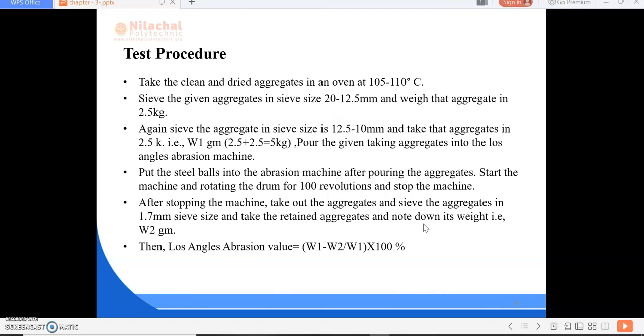The test procedure: take the clean and dried aggregate in an oven at 105 to 110 degrees centigrade. For this test we have to take always dry aggregate. Sieve the given aggregates in sieve size 20 mm to 12.5 mm and weigh the aggregate as 2.5 kg. Again sieve the aggregate in sieve size 12.5 to 10 mm and take the aggregates as 2.5 kg.